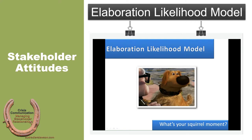Welcome to the Elaboration Likelihood Model. If any of you haven't seen the movie Up, you really should — not only because it's good, but because one of the characters, Doug the dog, has these brilliant squirrel moments where if something catches his attention, his collar says 'Squirrel.' This is a nice metaphor to keep in mind when talking about the Elaboration Likelihood Model and how people end up processing information and what captures our attention.